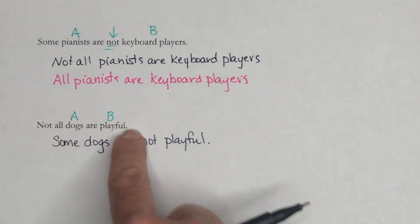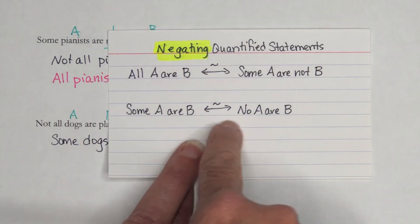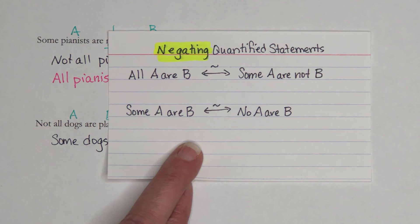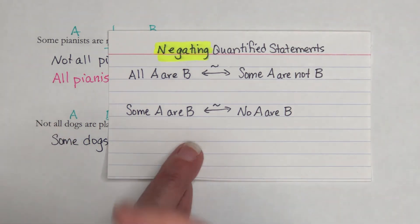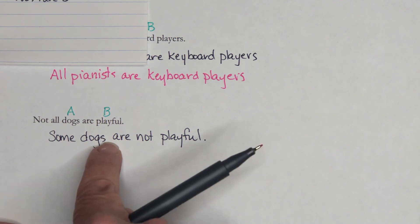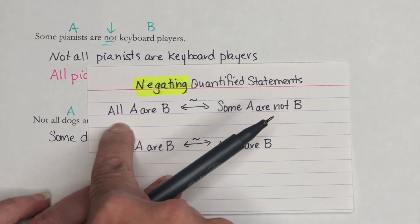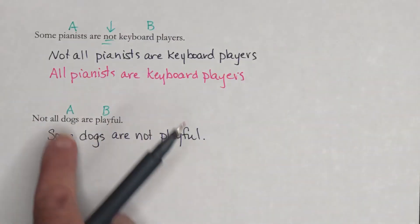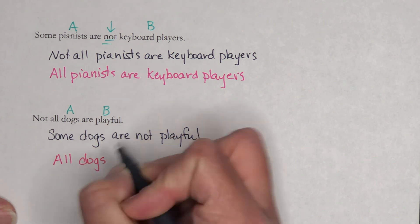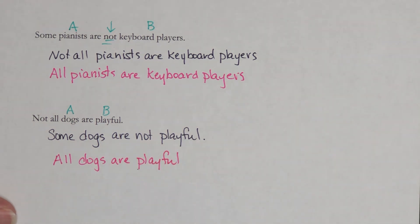For the last one: Not all dogs are playful. We do not have a 'not all' pattern directly on the negation chart, so we need to look at the equivalent statement first. Its equivalent is: some dogs are not playful — pattern: Some A are not B — whose negation is: All A are B. So: all dogs are playful. And that's the end of section 3.1.